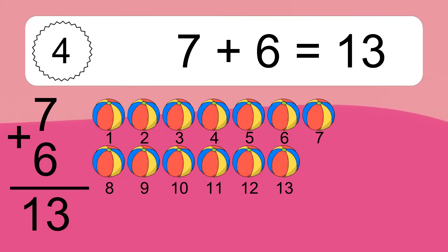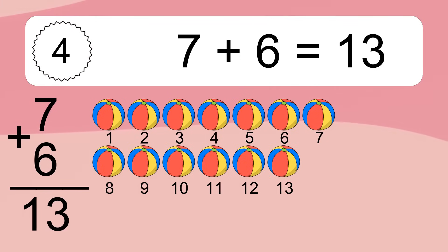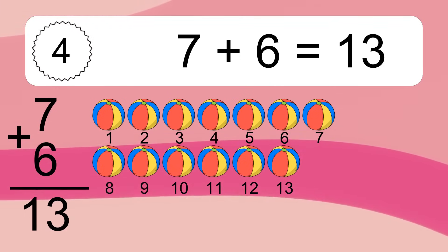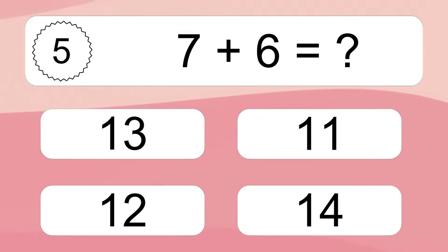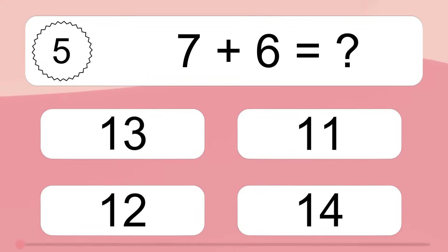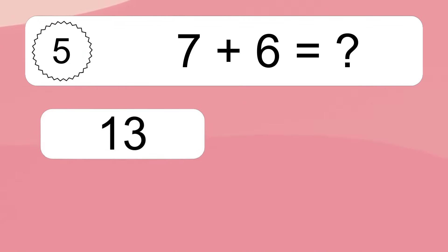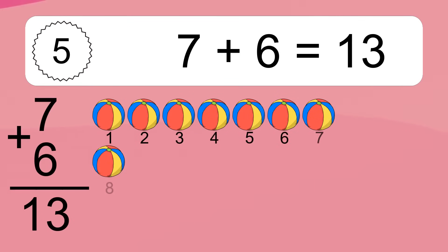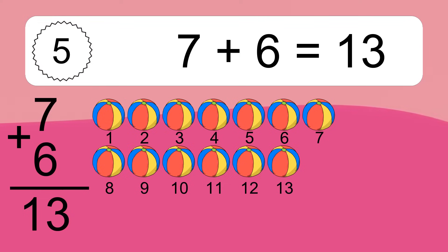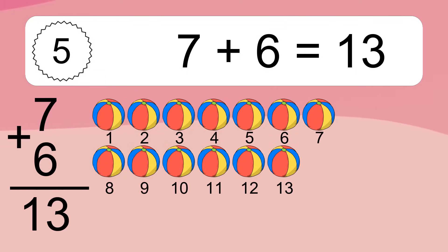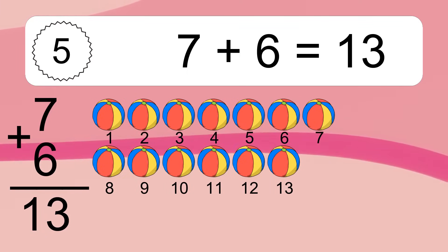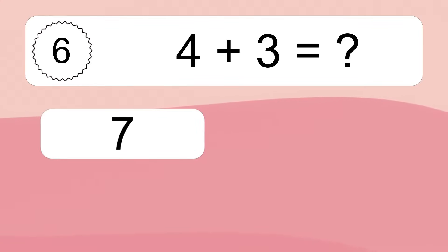7 plus 6 equals what? Let's count it: 1, 2, 3, 5, 6, 7, 8, 9, 10, 11, 12, 13. 7 plus 6 equals what? Let's count it: 1, 2, 3, 4, 5, 6, 7, 8, 9, 10, 11, 12, 13.